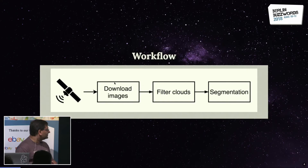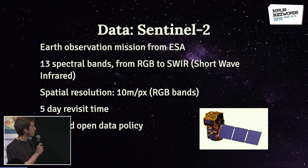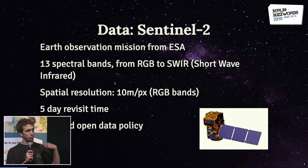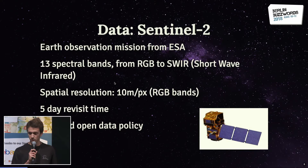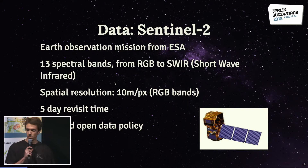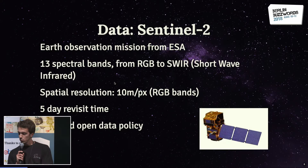Jose will now talk us through the process. The satellite images are coming from Sentinel-2, a satellite mission from the European Space Agency with two satellites that revisit each region every five days. The data comes from 13 spectral bands ranging from RGB up to the shortwave infrared. We'll only be using RGB here. The spatial resolution is 10 meters per pixel for the RGB bands; other bands have 20 or 60 meters per pixel. They follow a free and open data policy, which makes it convenient for us.